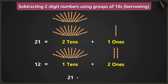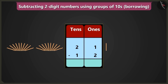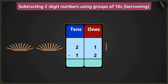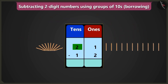How many would 21 minus 12 be? We write these numbers in the boxes of ones and tens. We cannot subtract 2 from 1 in the box of ones, so we borrow 1 ten from 2 tens in the box of tens. Now we write 11 ones instead of 1 in the ones box, and 1 ten instead of 2 tens in the tens box. Subtracting 2 ones from 11 ones leaves 9 ones.